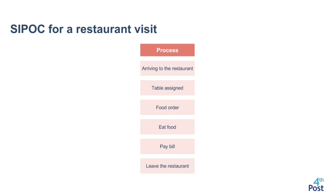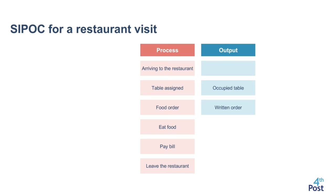We start by identifying the processes, and the next step is to look at the outputs. When the customer is arriving at the restaurant, there isn't necessarily an output, so we skip that one. When the customer is assigned to a table, the output is an occupied table. When the customer orders some food, the output is a written order — something the waiter has written on a piece of paper. And when the customer has eaten their food, you're probably going to have some dirty tableware.